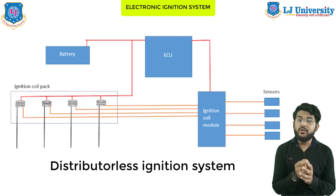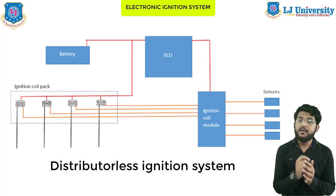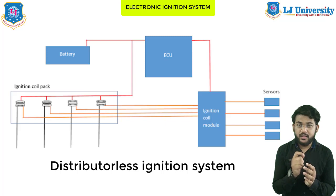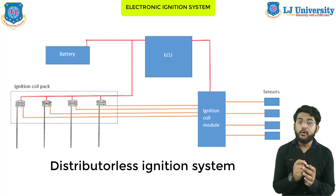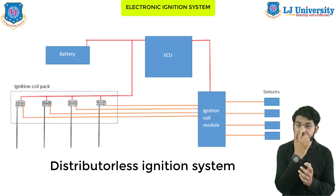The ignition coil module consists of several transistors, functioning as electronic switches — the same as in the transistor-type ignition system. However, there are more transistors here. The number of transistors in an ignition coil module matches the number of coils.